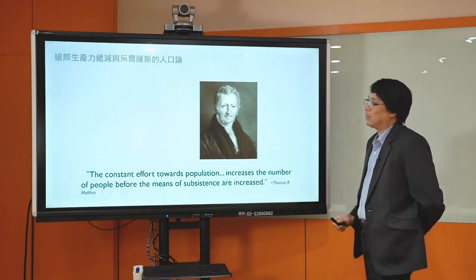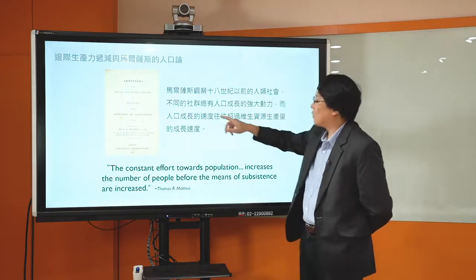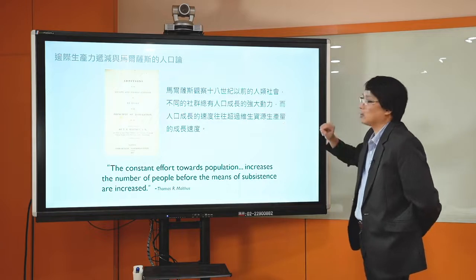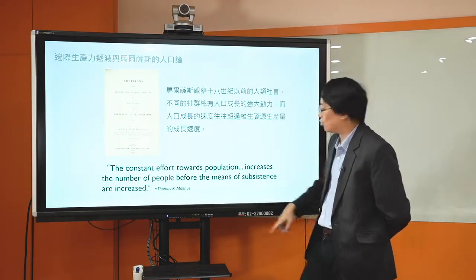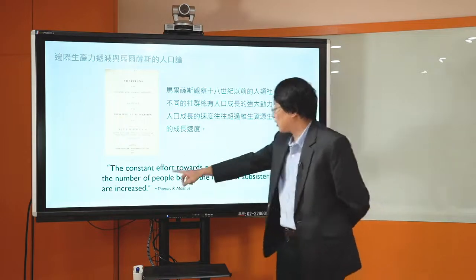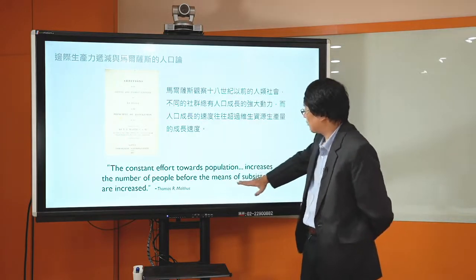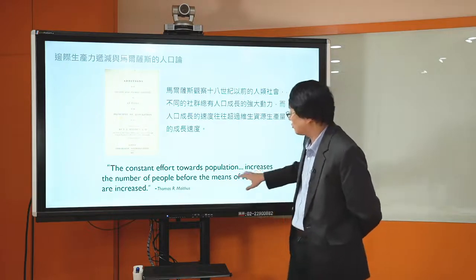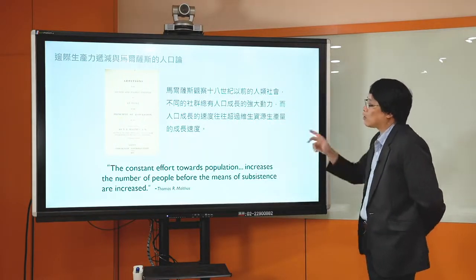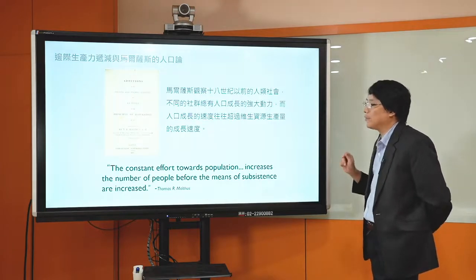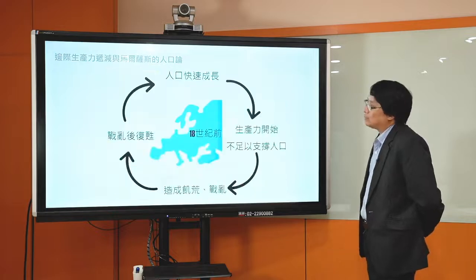他观察18世纪以前的人类社会，发现不同的社群里面总有人口成长的强大动力，而这个人口成长的速度往往超过维生资源生产量的成长速度。维生资源在增加以前，人口增加就比这个还要快。在以前的社会，维生资源大概就是土地跟食物，尤其是食物这件事情。